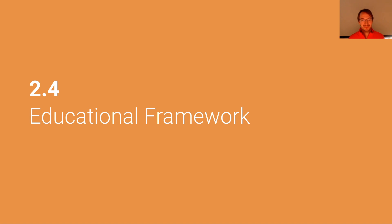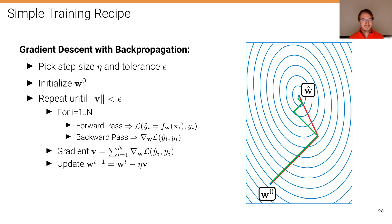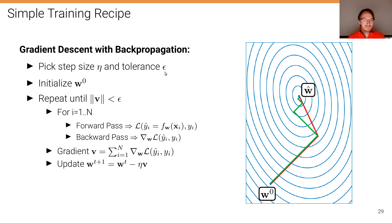In the last unit of this lecture, we're going to introduce the educational framework. Let's first summarize the content of the last units with the simple training recipe for gradient descent on a computational graph using the backpropagation algorithm. We start by picking a step size eta and a tolerance value epsilon, and then we initialize the parameters w at iteration zero to some value, say a random value. This is the initial state of the parameters. And now we repeat until the magnitude of the gradient falls below this tolerance threshold epsilon.